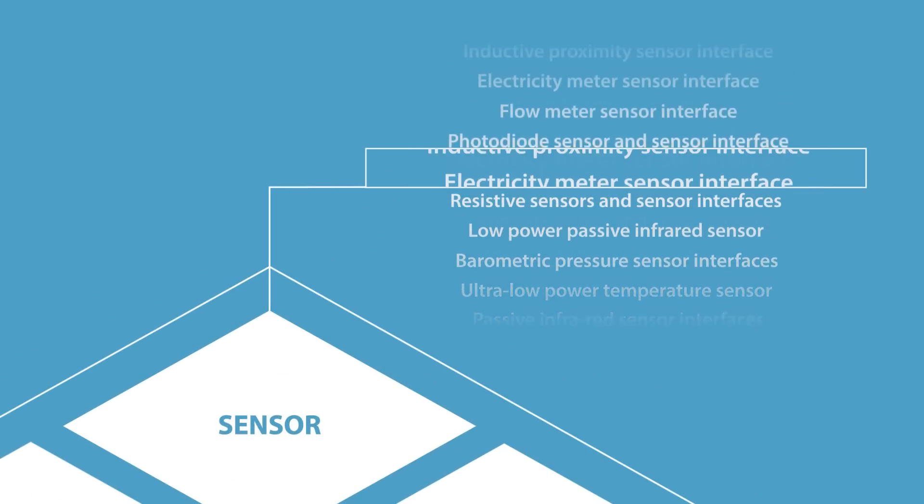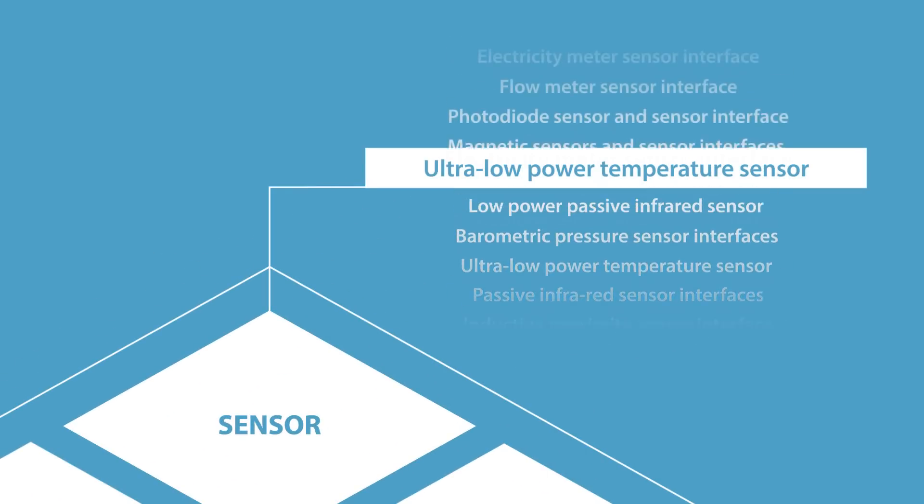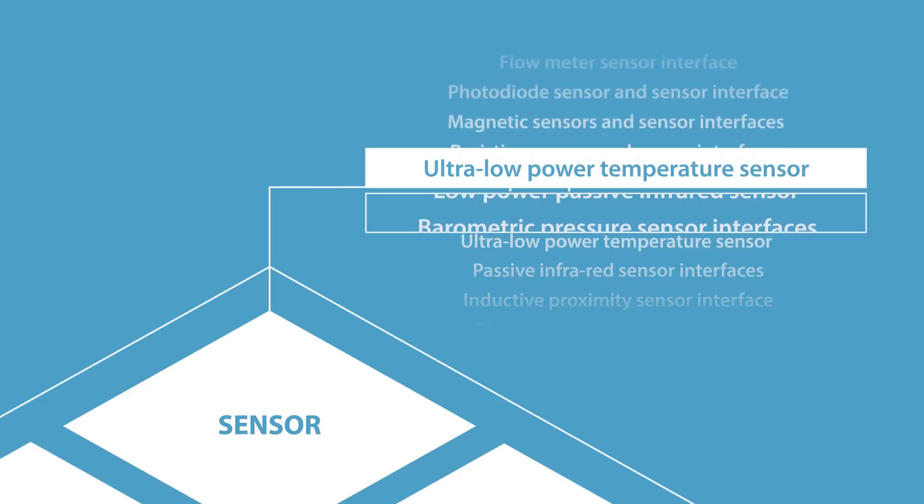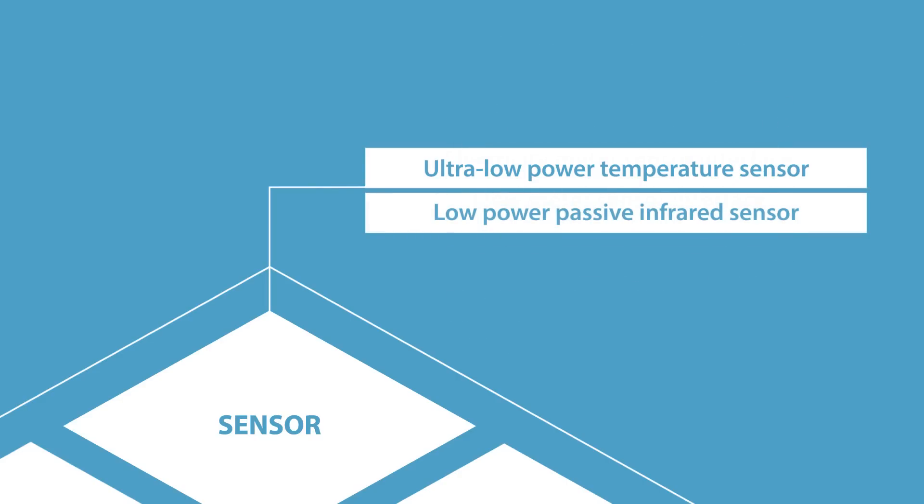For this kind of thermostat, a customer would choose an ultra-low power temperature sensor as well as a low-power passive infrared sensor that measure the temperature and detect human presence.